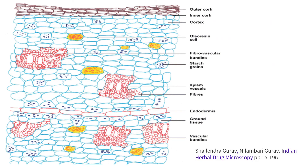These details about microscopy are from the book of Indian Herbal Drug Microscopy, wherein the outer cork, inner cork, followed by the cortex region housing oleoresin cells and fibrovascular bundles containing starch grains and xylem fibers are noted. Just below that is a single layer of endodermis, then the entire ground tissue comprising vascular bundles, oleoresin cells, and starch grains.